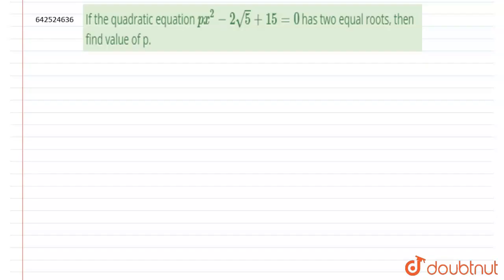Hello everyone, let us solve this question. It says if the quadratic equation px² - 2√5x + 15 = 0 has two equal roots, then find the value of p. So here we have a quadratic equation which has two equal roots.